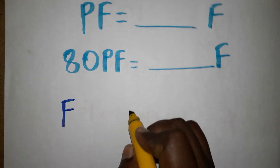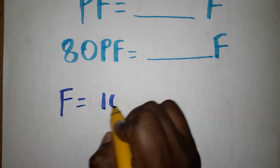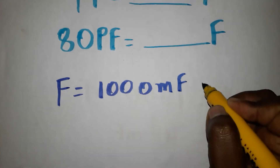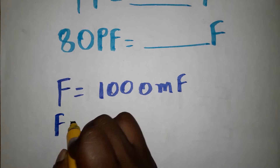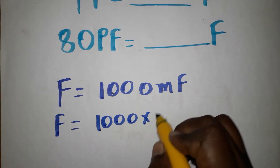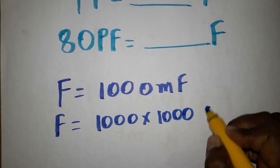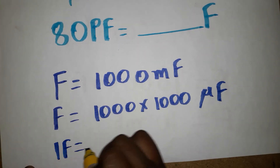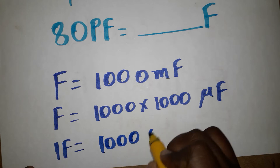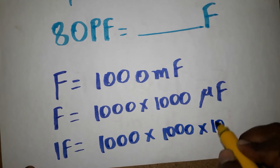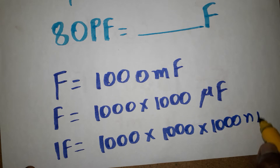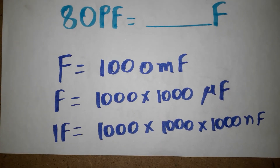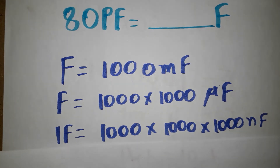This is a capacitance unit. So 1 farad is equal to 1000 millifarads. 1 farad is equal to 1000 into 1000 microfarads. So 1 farad is equal to 1000 into 1000 into 1000 nanofarads. Each step you increase by 3 zeros — milli, micro, nano.